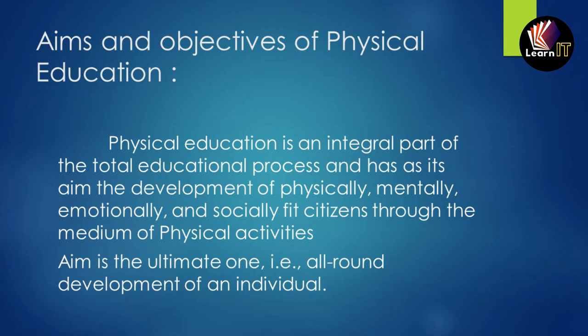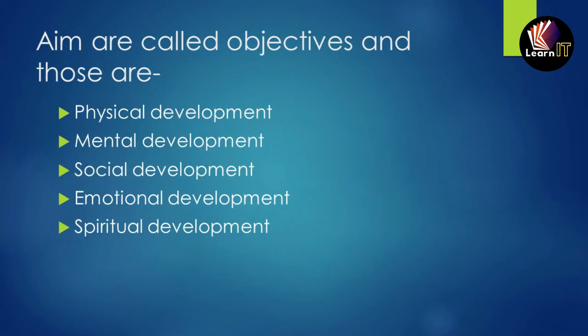Now moving on to the main objectives: the aim of physical education is ultimately the all-round development of an individual. The means and ways we adopt to achieve our aim are called objectives, and those are: number one, physical development; second, mental development; third, social development; fourth, emotional development; and fifth, spiritual development. We will study all of these in detail.